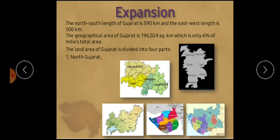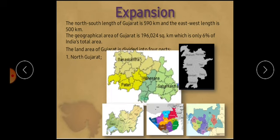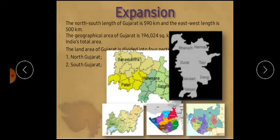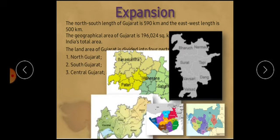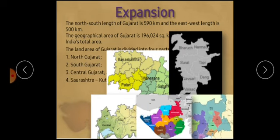The land area of Gujarat is divided into four parts: North Gujarat — here you see Banaskantha, Mehsana, Patan and all. South Gujarat — here you see Bharuch, Narmada, Surat and all. Central Gujarat. And Saurashtra and Kach.